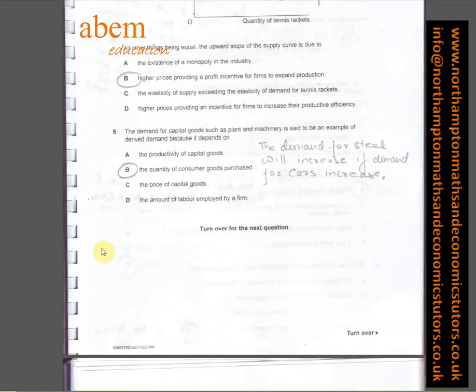In question number five, B is the answer. The demand for steel will increase if demand for cars increases. So we're talking about derived demand. The quantity of consumer goods purchased would lead to an increase for capital goods.